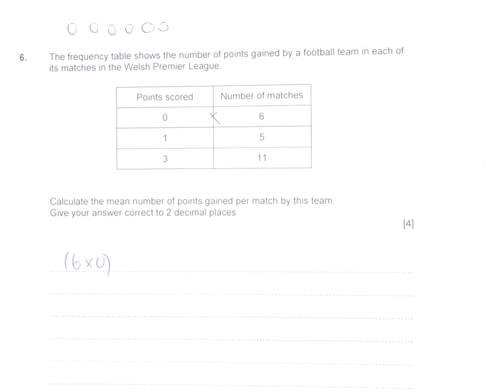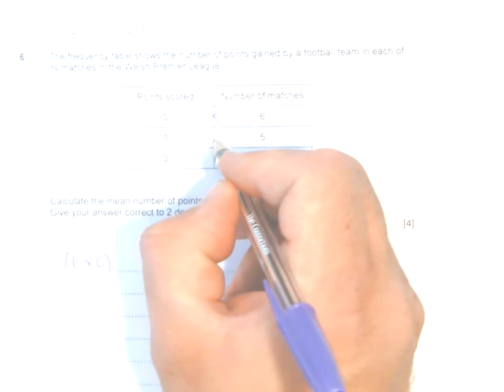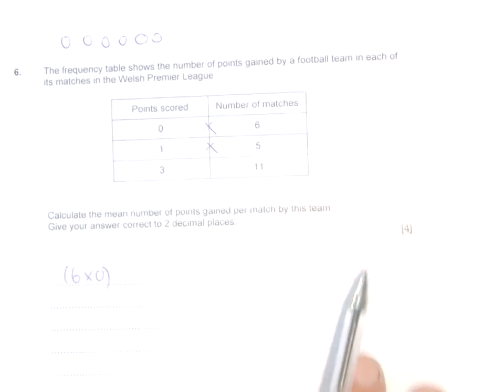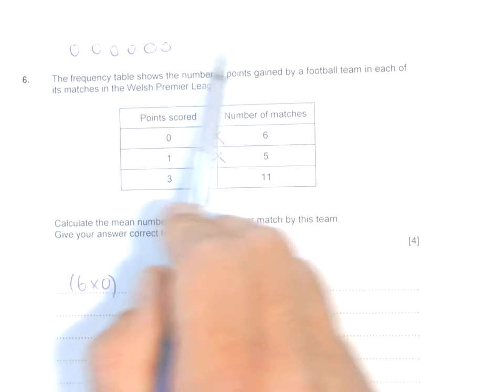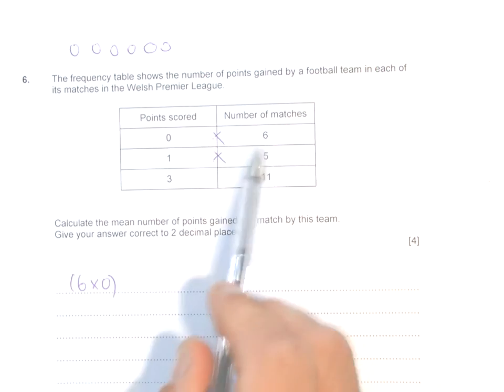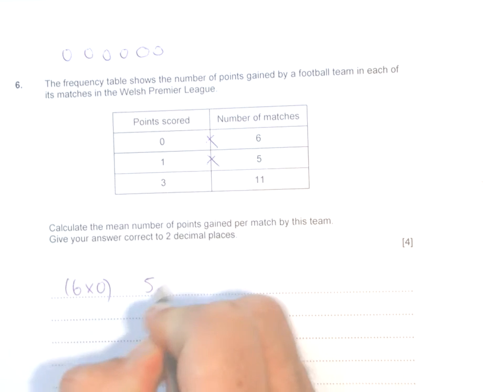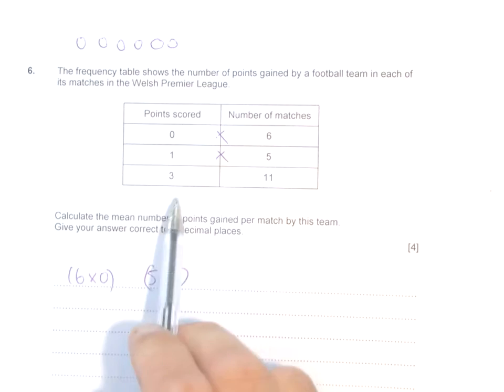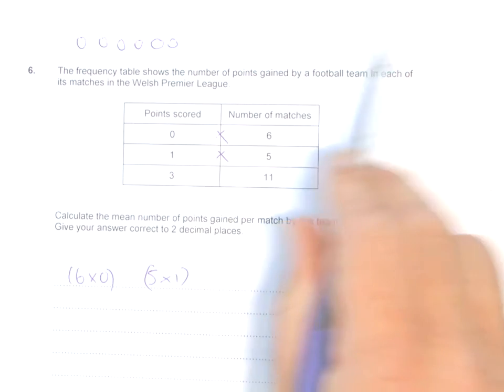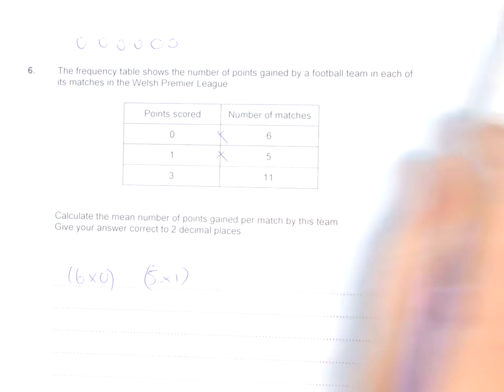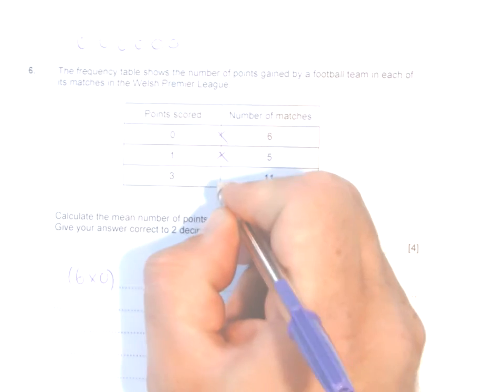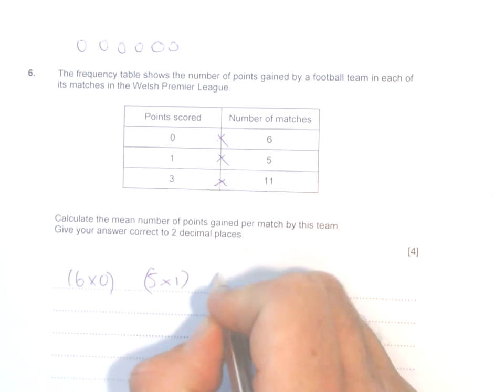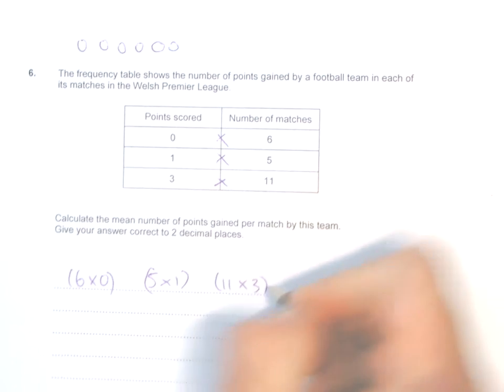When you add up zero six times it becomes zero. Then you've got five matches that were draws, so that's like having five ones—easier to multiply. Then you've got eleven matches which they won, so you've got three points written down eleven times. Instead of doing 3 + 3 + 3 eleven times, it'd be much easier just to multiply them. So 11 × 3.